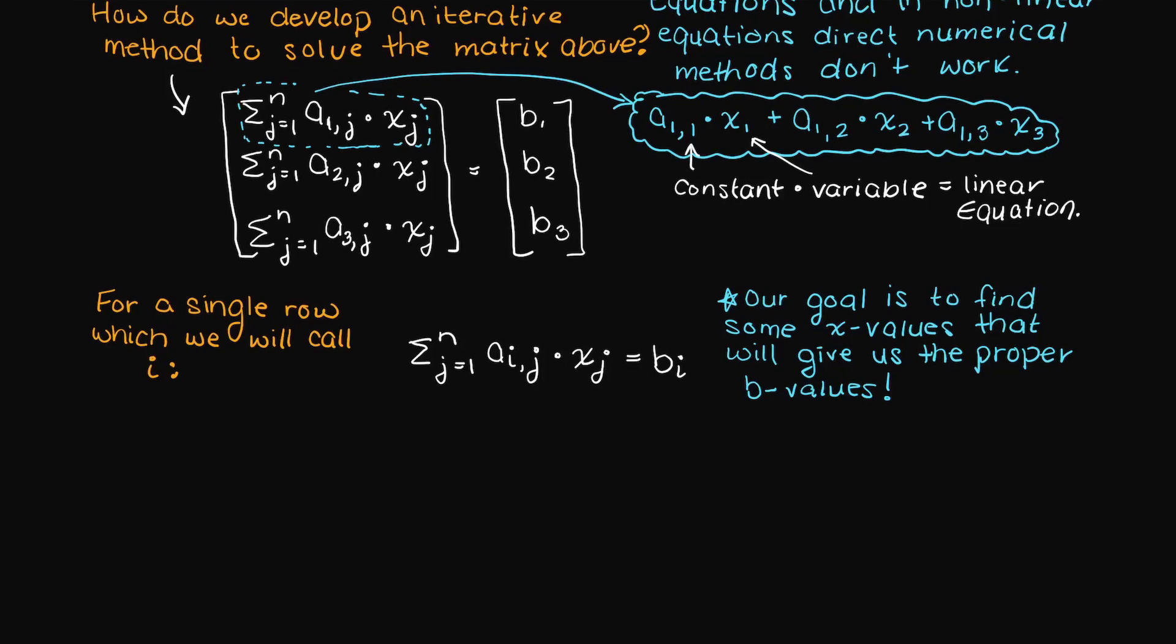So since our goal is to find an x value, let's write our equation to solve for the xi value, the value of x for a given row, and then we'll end up with the following. Since we move that term to the other side to isolate, we can solve it.